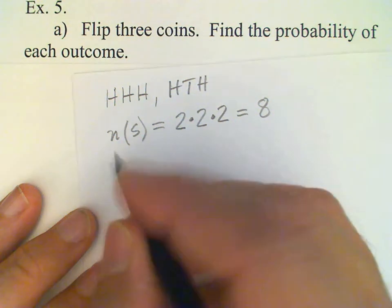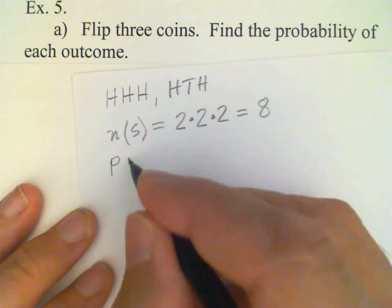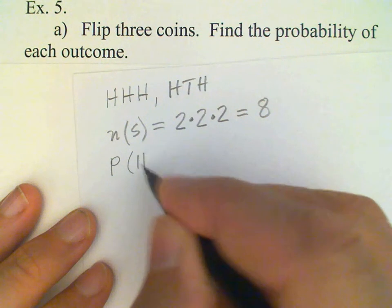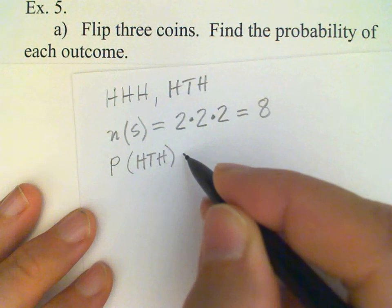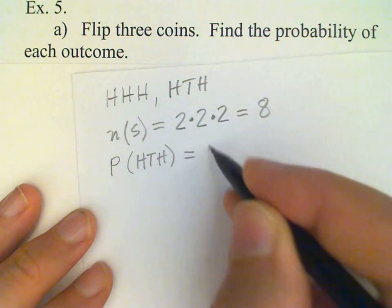And therefore the probability of any one of these outcomes, let's say the head, tail, head outcome, meaning head on the nickel, tail on the dime, head on the quarter, is just one out of eight.